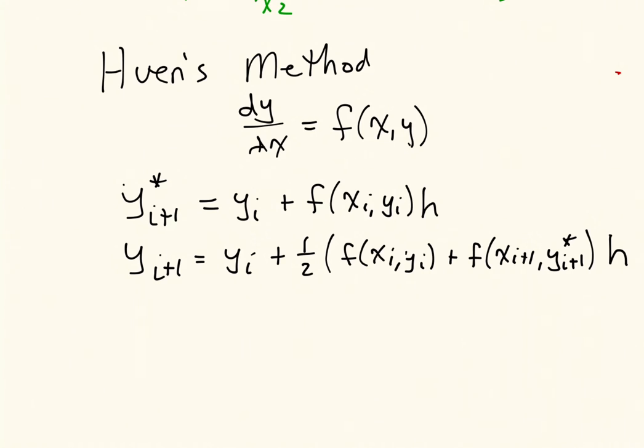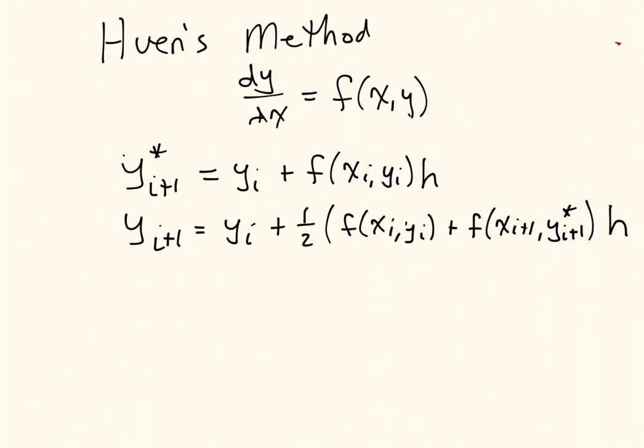So that is Huen's method. It's a two-step method. The first step is known as the predictor step, and the second step is known as the corrector step. Those names come from the predictor step predicts the value of y(i+1)*, and then the corrector step corrects that value using a slope computed at the beginning of the interval and a slope at the end of the interval. So this is the slope at the beginning, and this is the slope at the end of the interval.